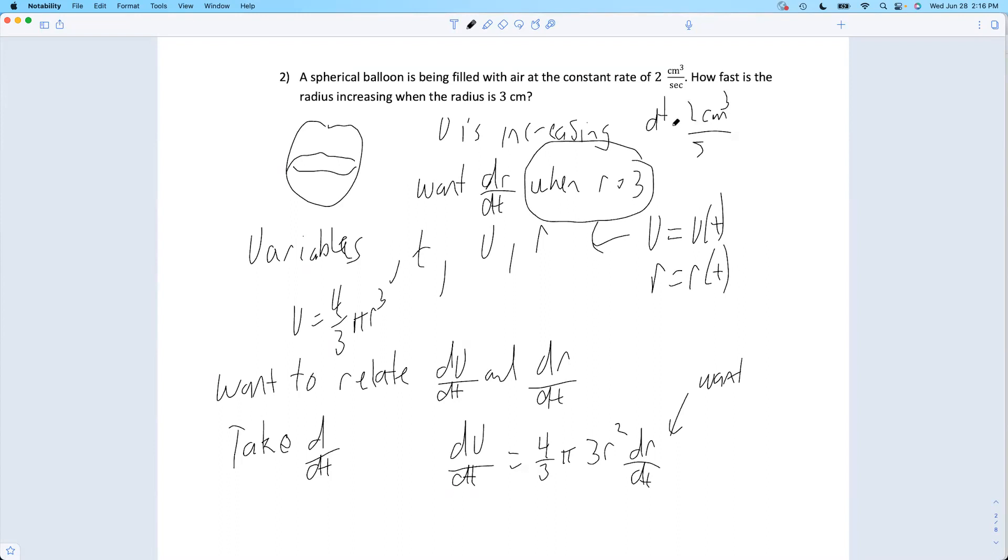What's this? That's dv/dt. That's how quickly the volume is changing constantly. So my volume, we're just pumping in two cubic centimeters every second. My volume is increasing at a constant rate. This guy is not constant. That's changing.